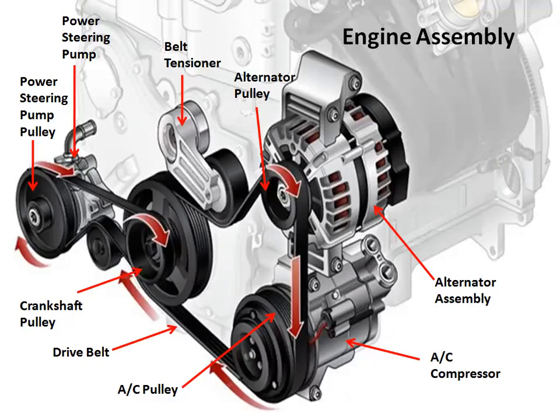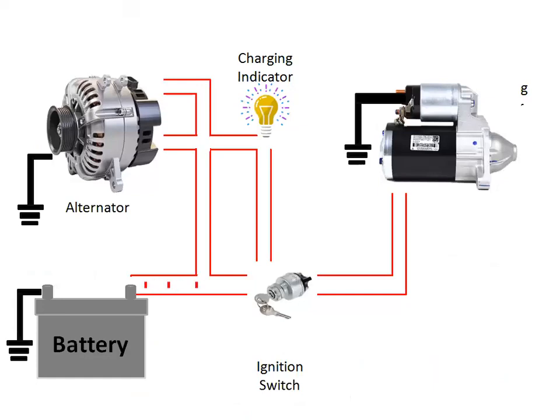Hey everyone, Bob here. Today I'd like to explain the function of the alternator and the charging system of a vehicle. This presentation is intended for technicians, mechanics, and other enthusiasts. The alternator is driven by the engine along with other components like the air conditioning compressor, water pump, power steering pump, and sometimes an air injection pump for gas emission control purposes, to lower hydrocarbon and carbon monoxide emissions. The purpose of the alternator is to supply current to recharge the battery and power the electrical accessories in the vehicle.